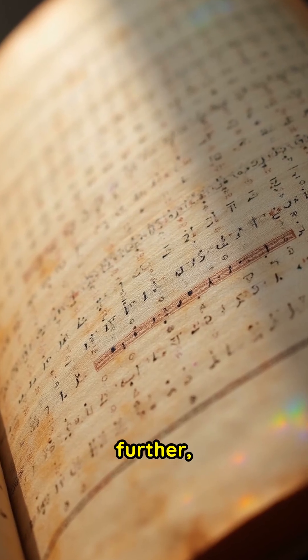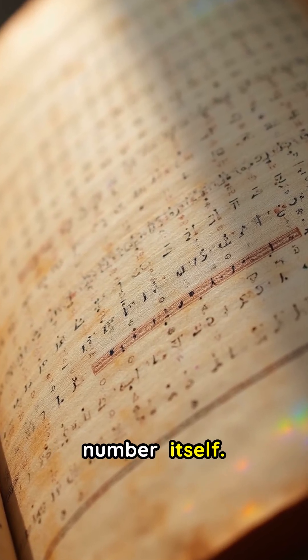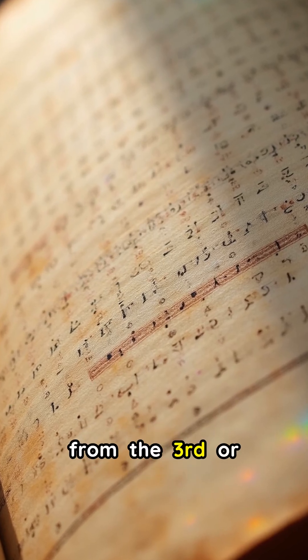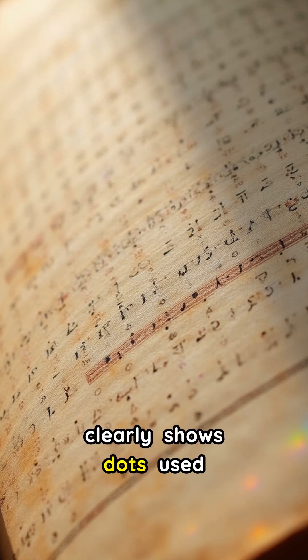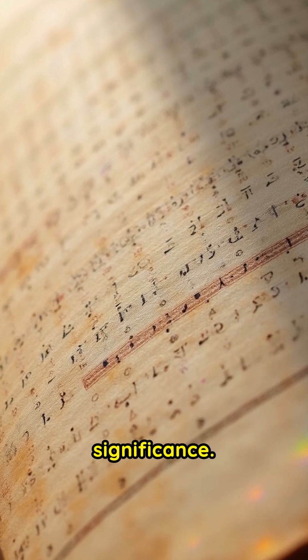But ancient Indians went further, treating zero as a number itself. The Bhakshali manuscript from the 3rd or 4th century clearly shows dots used as zero, proving its early numerical significance.